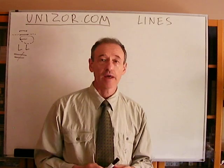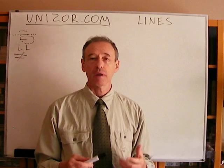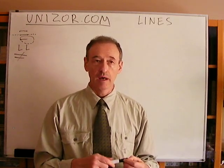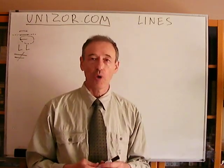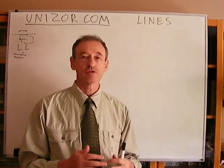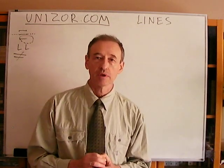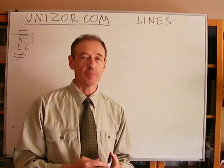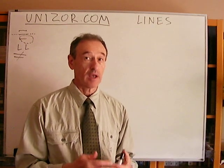The previous lecture was dedicated to points, and points were one of the fundamental elements which we do not really define as a particular object. However, we do define certain properties of points. Same thing with lines — we consider this to be an undefinable, per se, geometrical object. However, lines do have certain properties, and any geometric object which satisfies these properties can be called a line.